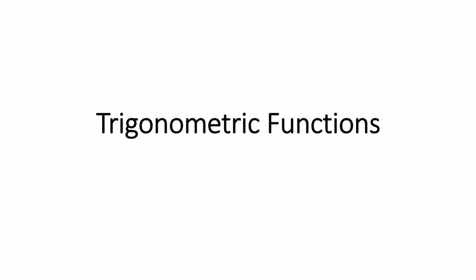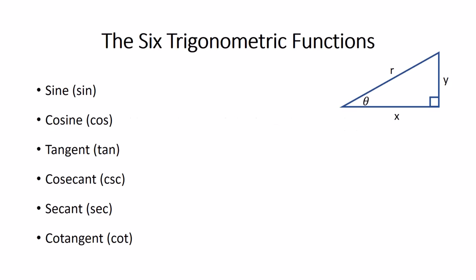This is a video introducing you to the various trigonometric functions and how they should be applied to various angles. There are six trigonometric functions total: sine, cosine, tangent, cosecant, secant, and cotangent. The abbreviations for each of these can be seen in parentheses. This is often how we will write these trig functions with their abbreviations.